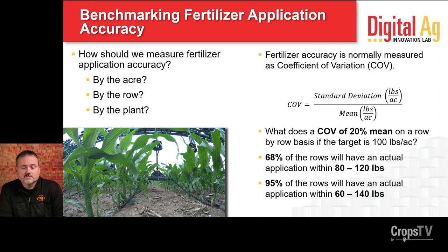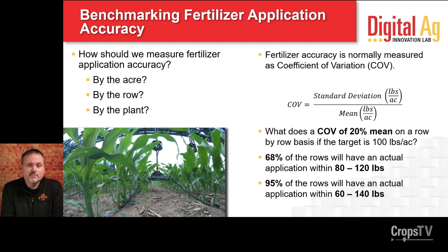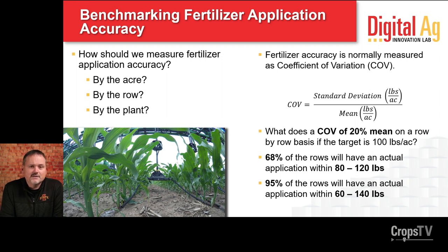Thinking about nitrogen in particular: if we have a 20% COV — which is a pretty well-set-up machine — and we're applying 100 pounds per acre of urea, statistically 68% of our rows will have an actual application rate between 80 to 120 pounds. I may or may not see a yield difference there. But 95% of rows means some rows will be as low as 60 pounds and some as high as 140 pounds. That is what starts to cause striping — the visible nutrient deficiency response in aerial images.